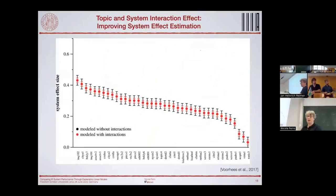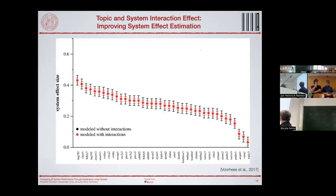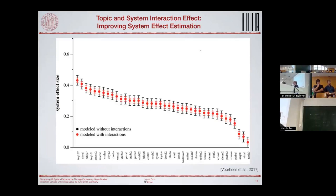Allan et al. did this work and achieved what they wanted: estimating the topic-system interaction factor made the model more precise. Less variance was left in the error because some variance moved into the topic-system interaction term. Applied to the estimation of system performance, this reduces the error bars around systems — meaning we are more accurate in saying one system is significantly different from another.